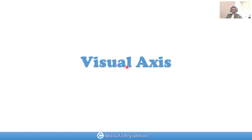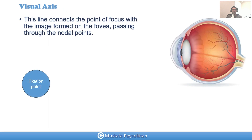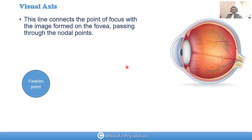The visual axis is the line that connects any fixation point — or point of focus, any point outside of our eye — with the image that forms on the fovea. The fovea is the point in the eye where we have a huge concentration of nerves and can get a very sharp image. This line passes through the nodal point of the lens.